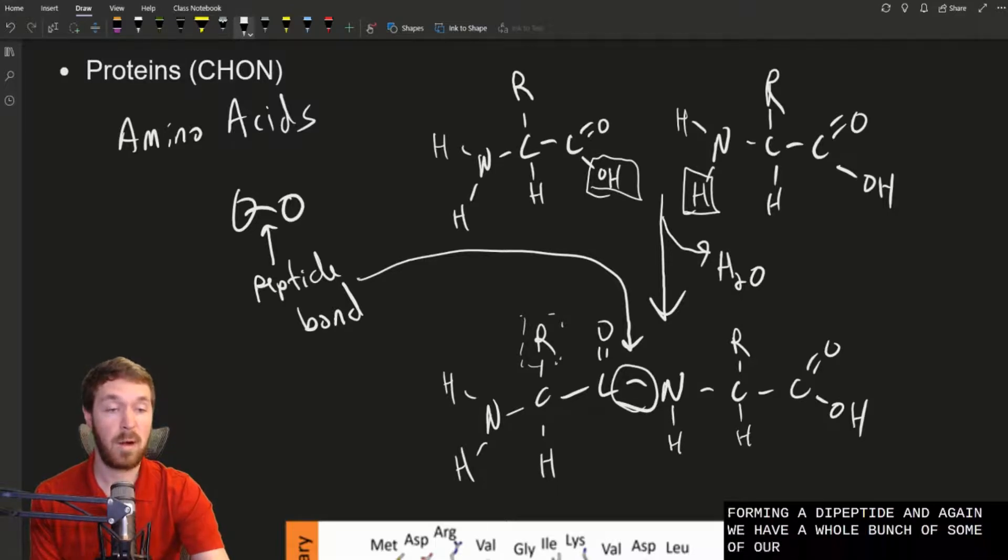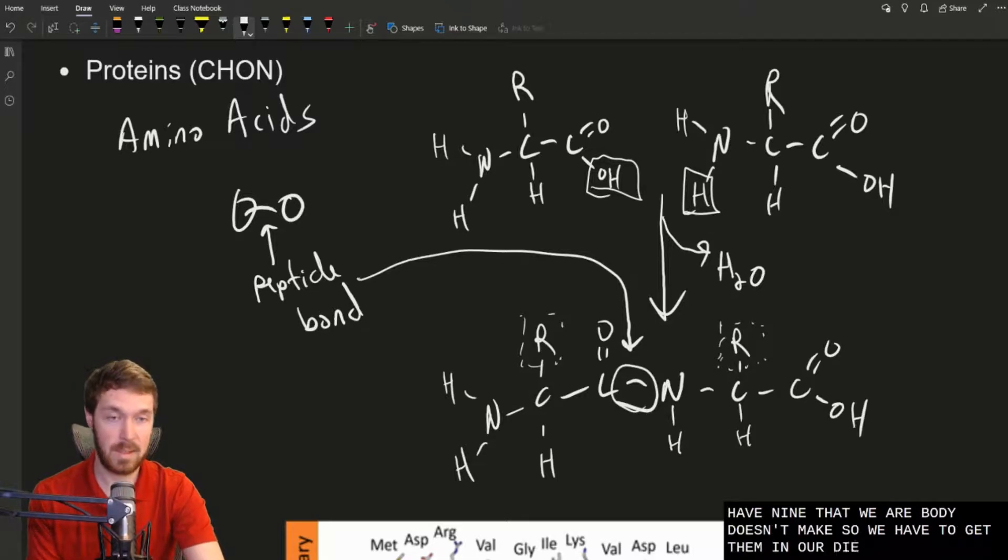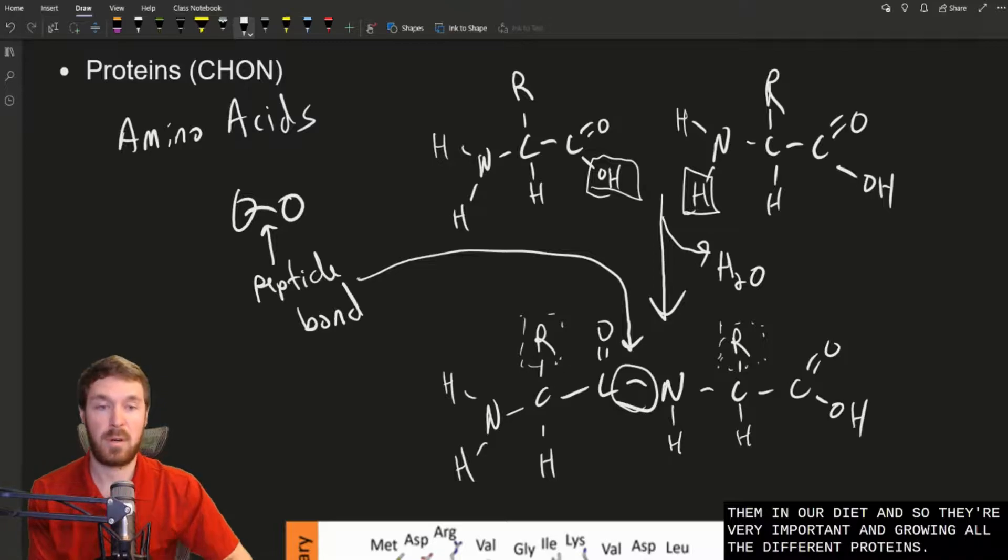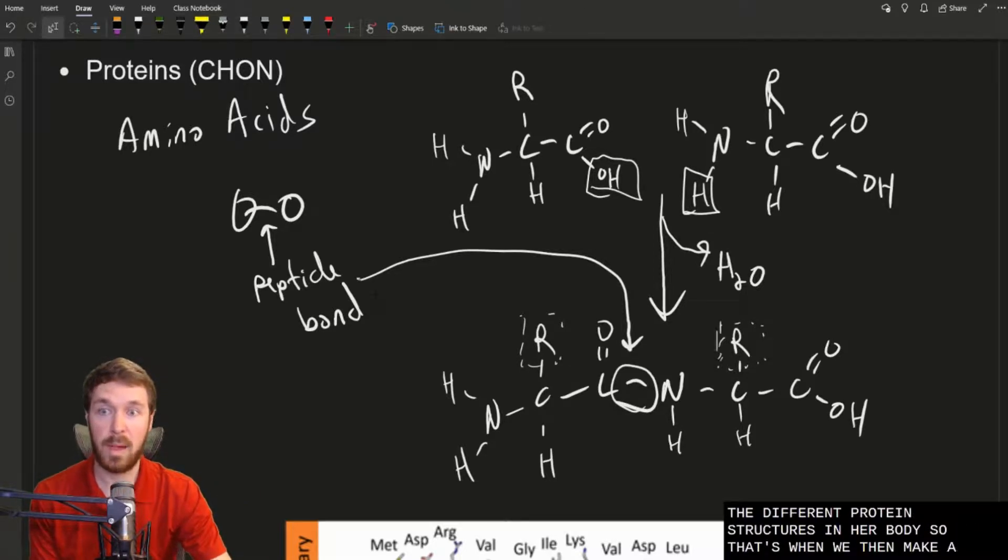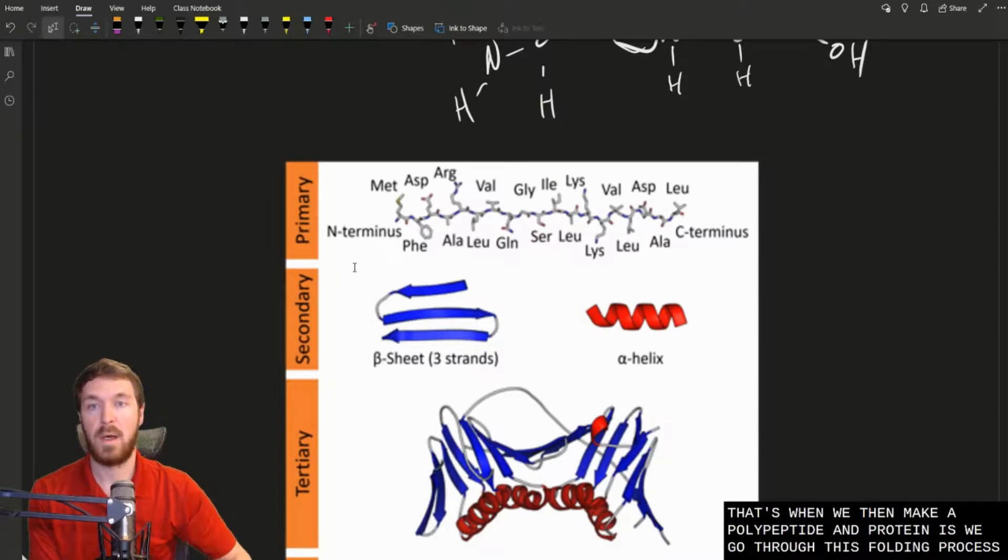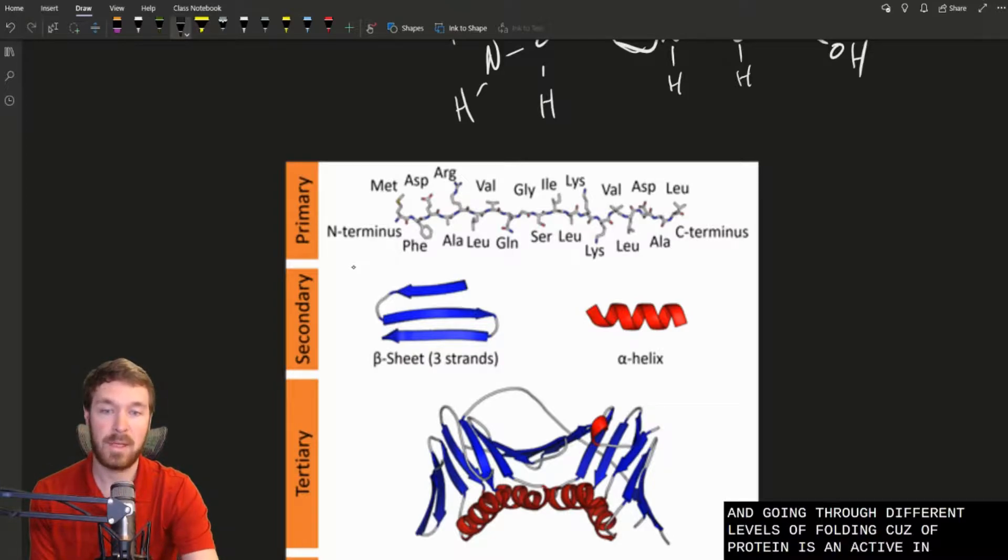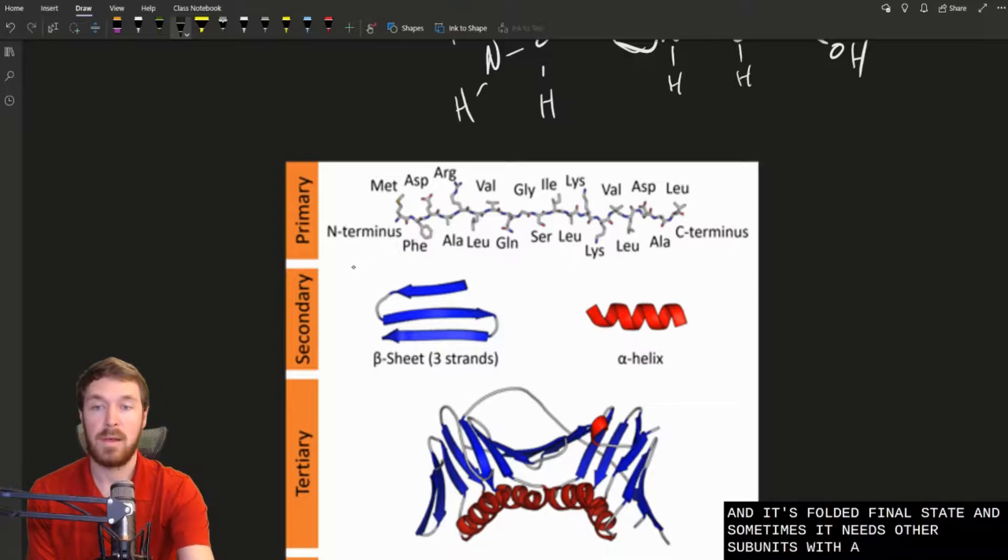We have a whole bunch of, some of our amino acids are called essential amino acids. We have nine that our body doesn't make, so we have to get them in our diet. And so they're very important in growing all the different protein structures in our body. So that's when we then make a polypeptide. And one thing with proteins is we go through this folding process and going through different levels of folding. Because a protein isn't active until it's in its folded final state, and sometimes it needs other subunits with it.